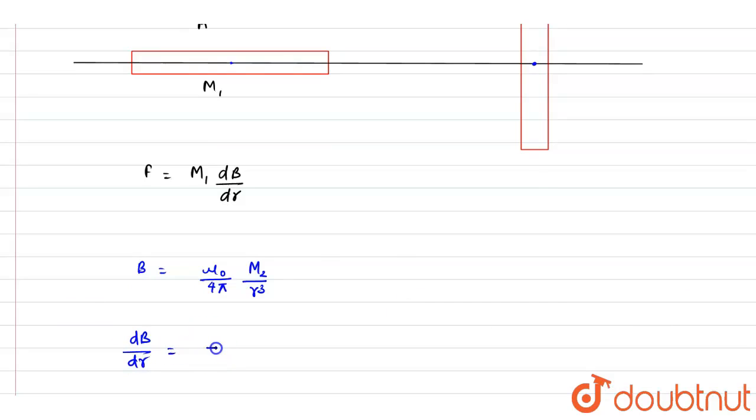It will be equals to minus 3. If you see, differentiation of this r cube, r to the power minus 3 is there. So you can just put the value.